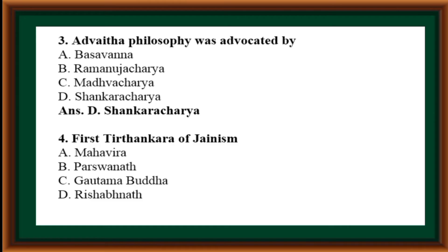First Tirthankar of Jainism: options are Mahavira, Parshwanath, Gautama Buddha, Rishabhanath. Correct answer is Option D: Rishabhanath.